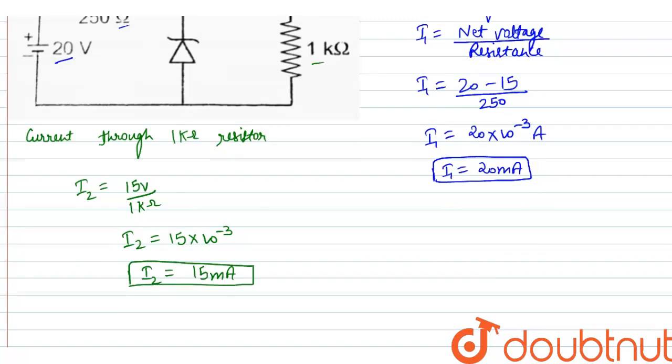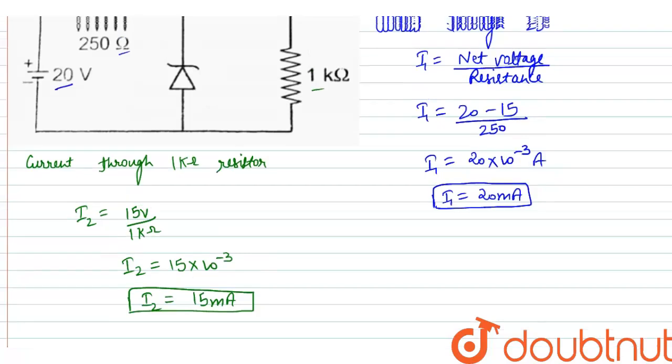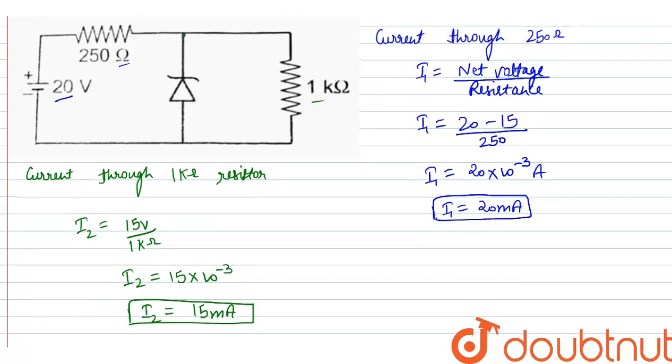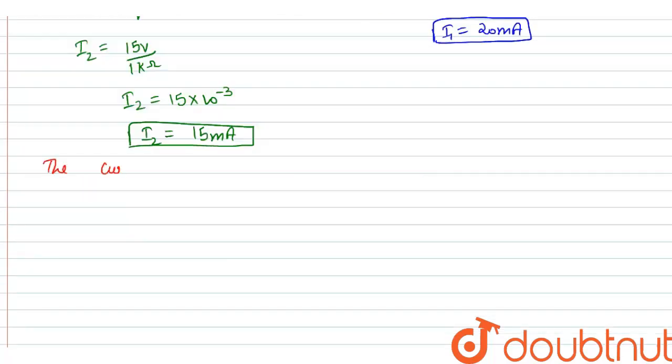Now, we need to find the current through the diode. Current in the branch of diode is I equals 5 milliampere.